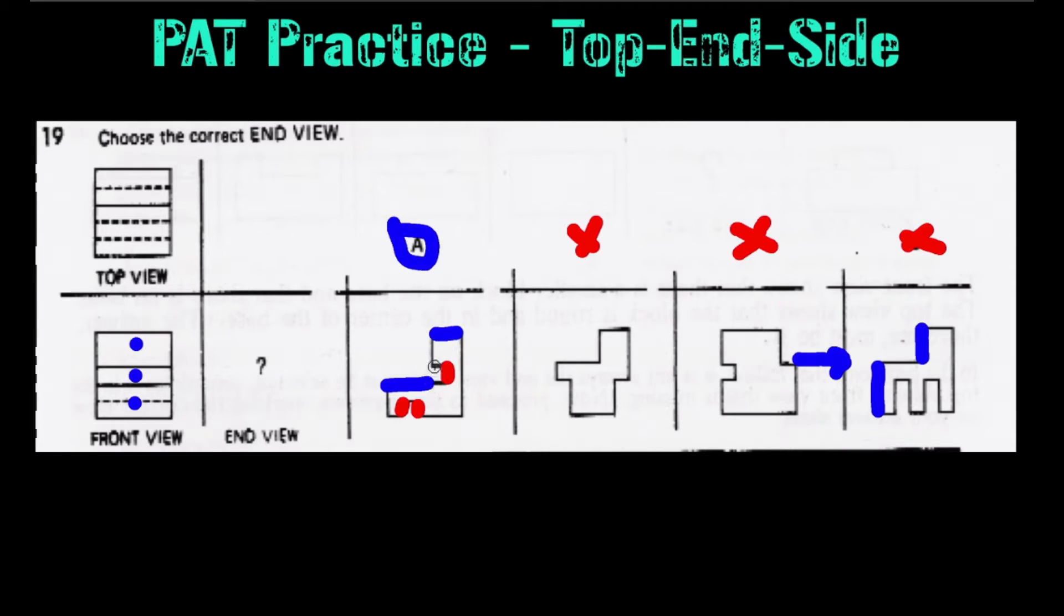And that is enough to eliminate D and confirm that the correct answer is A. And if we look at A here, you can see that we have one, two, three sections that you would see from the front. So obviously, our answer is A here.